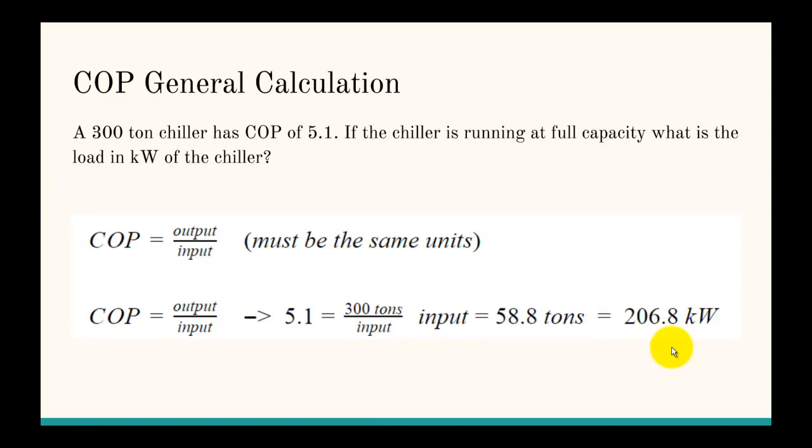In this case, a 300 ton chiller has a COP of 5.1. If the chiller is running at full capacity, what is the load in kilowatts? Again, we have COP equals the output over the input, and it must be in the same units.